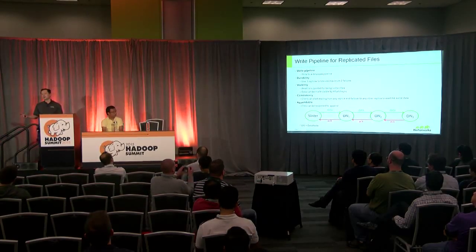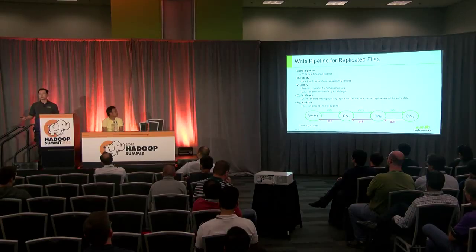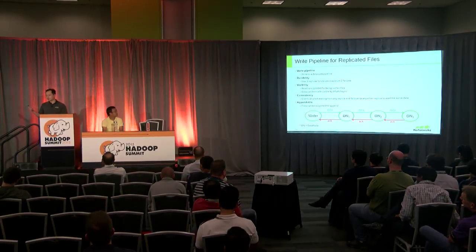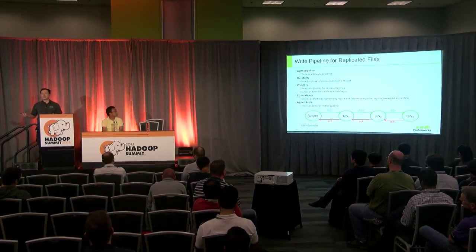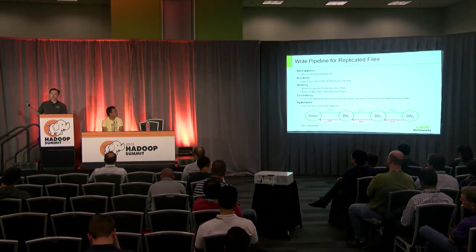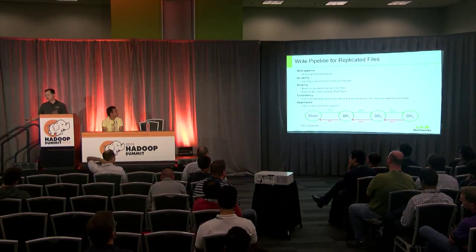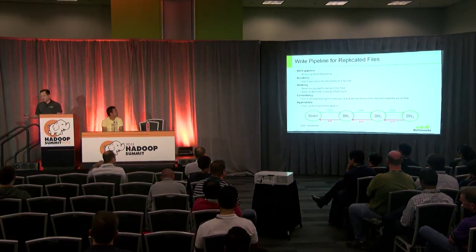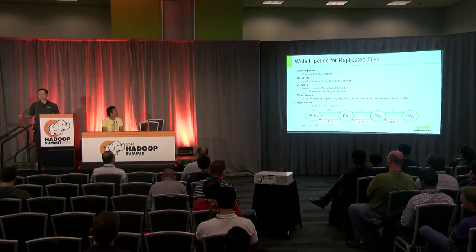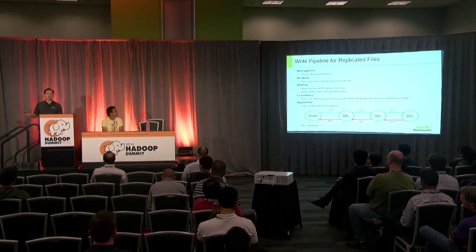One important feature of our write pipeline is the visibility guarantee: a reader can read a file that is still being written. You can use HFlush to make data visible to the reader. We also support consistency — a reader can read from any replica and fail over to another. For HDFS files we also support append. We want to provide something similar for erasure-coded files.